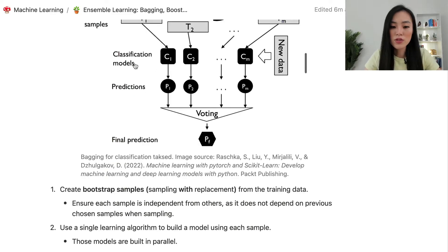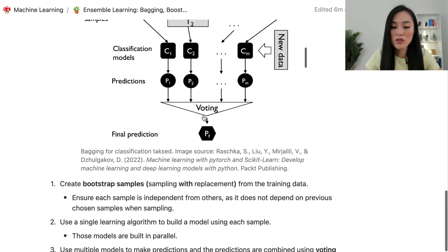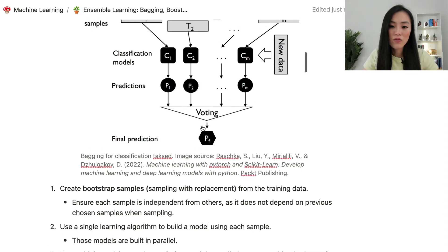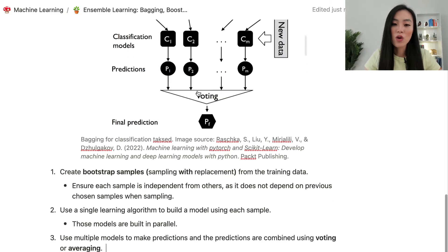We then use multiple models to make predictions, and the predictions are combined using voting or averaging. For classification tasks, voting means the most frequent result will be the final prediction. For regression tasks, averaging means we take the average of all predictions to be the final prediction of the model.